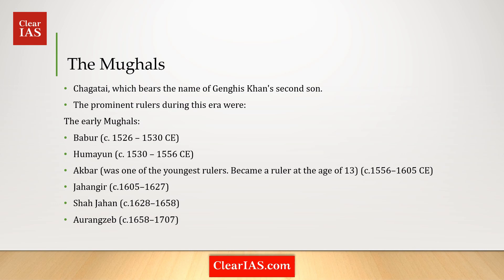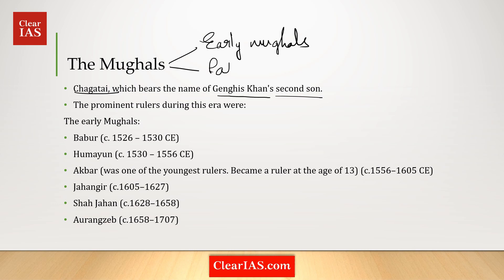The Mughals belong to a branch of Turks known as Chagatai, which bears the name of Genghis Khan's second son. The Mughal era can be divided into the early Mughals and the late Mughals. The early Mughals were stronger and more dominant, emphasizing administrative reforms and brilliant in their rule. The late Mughals can be seen more as puppets of their ministers, losing most of their authority when the Europeans arrived.